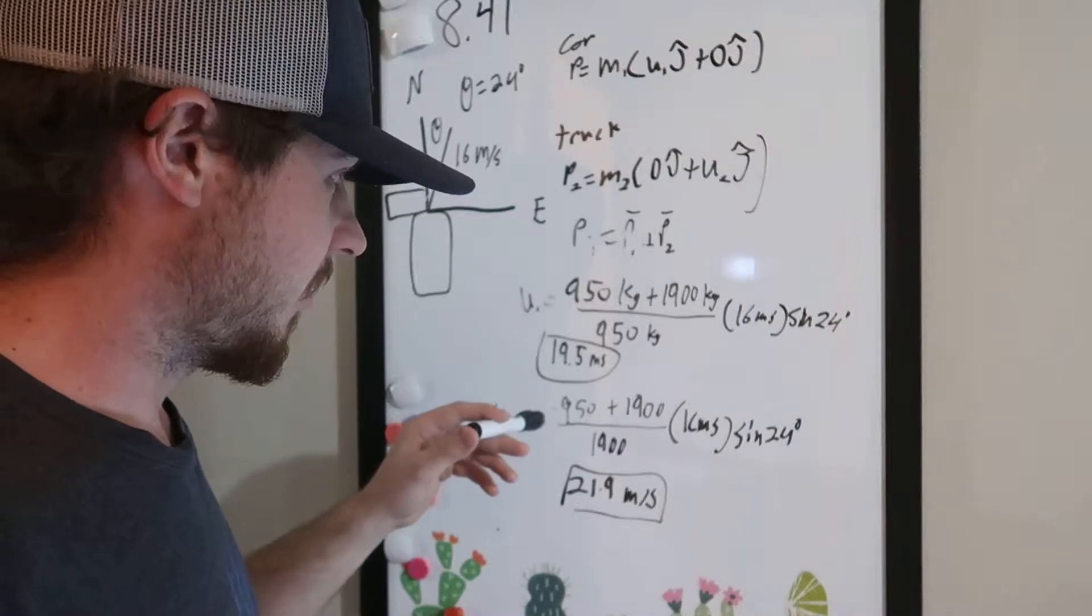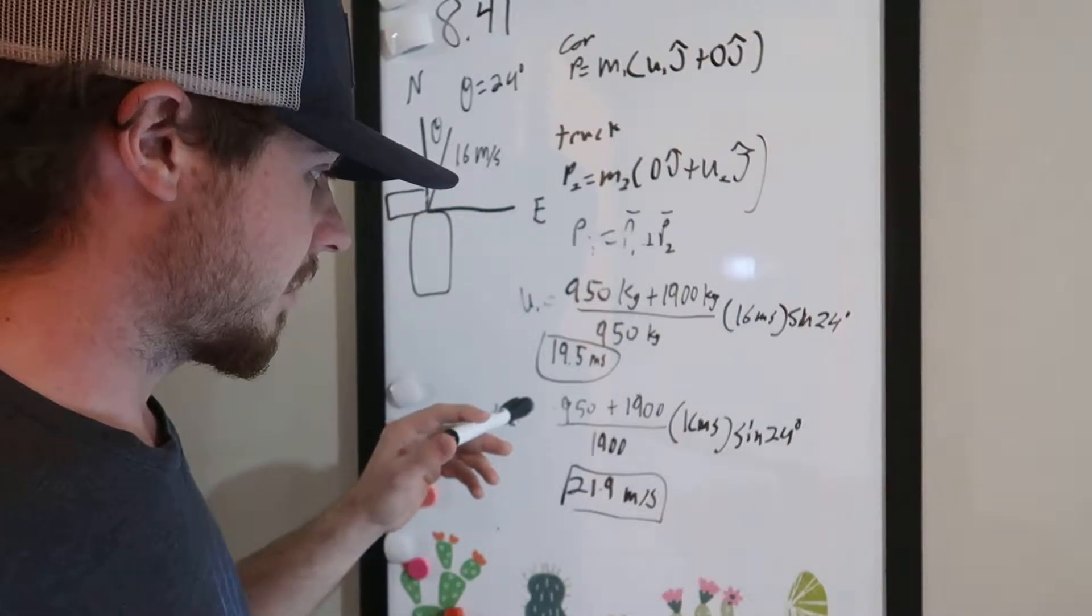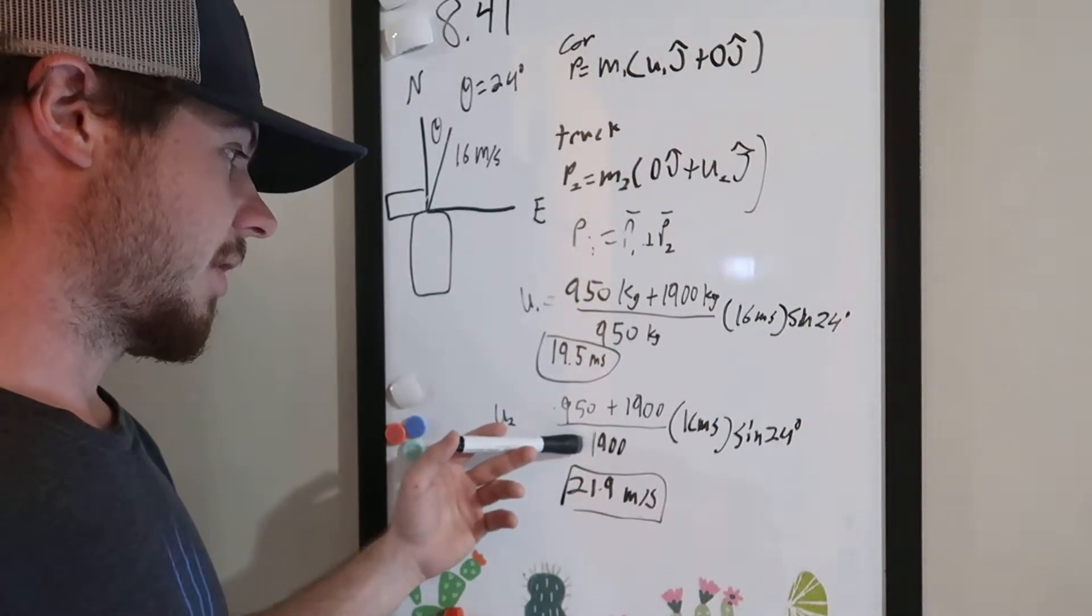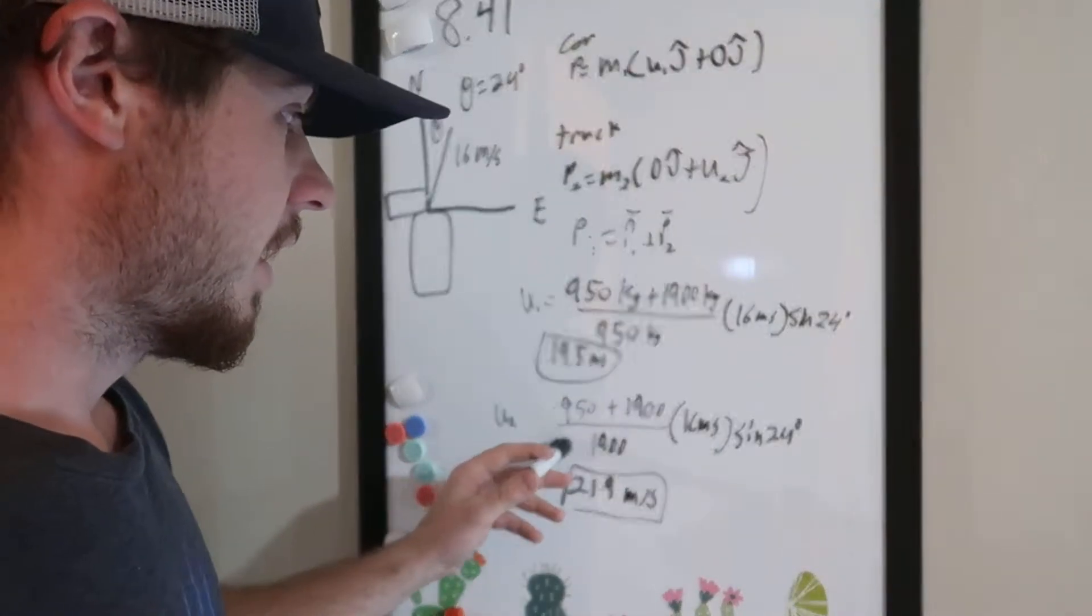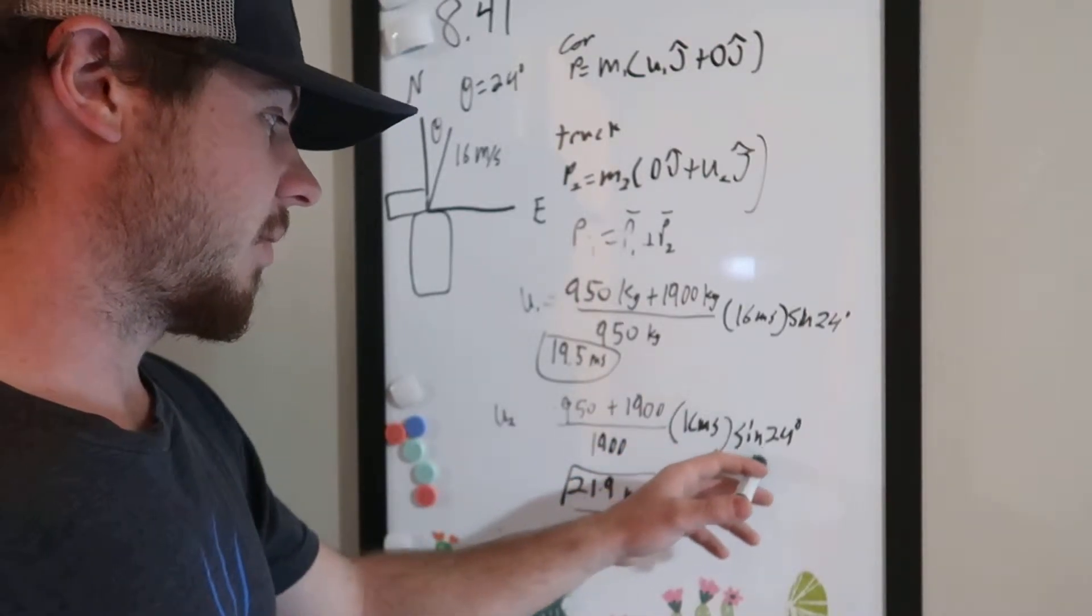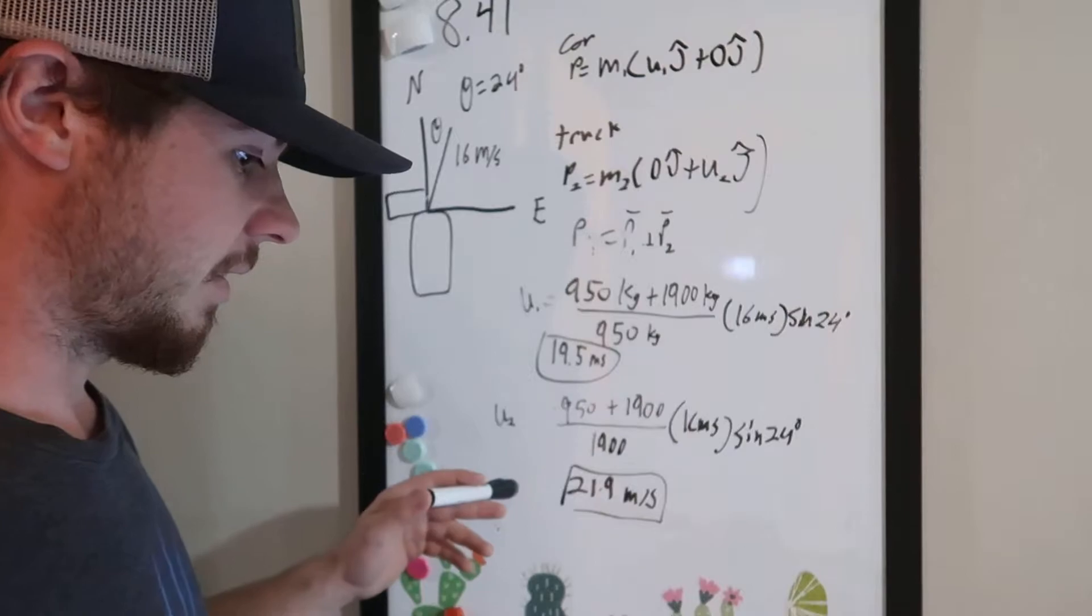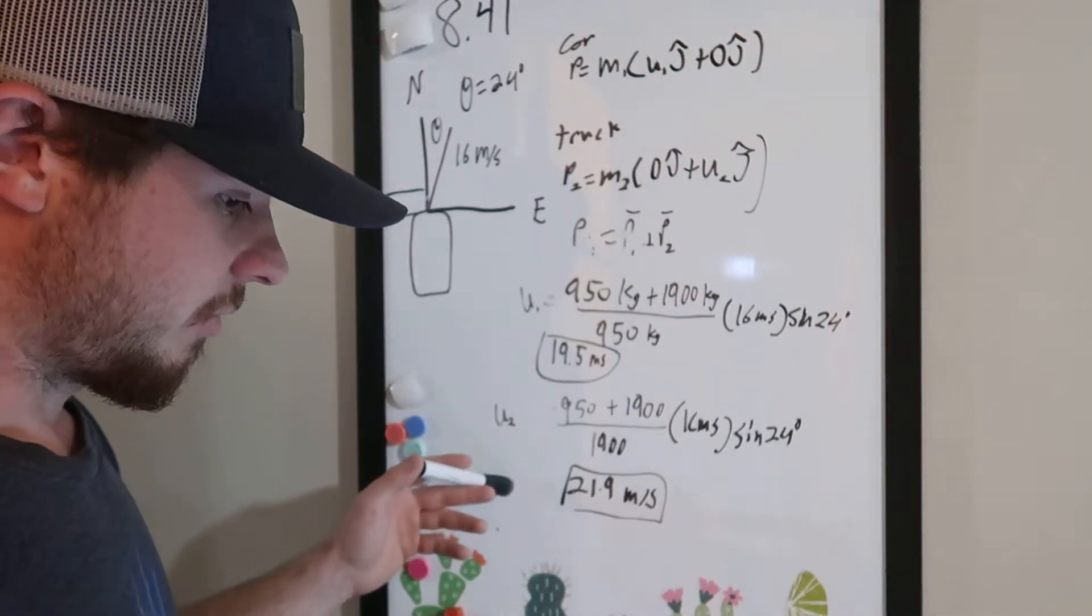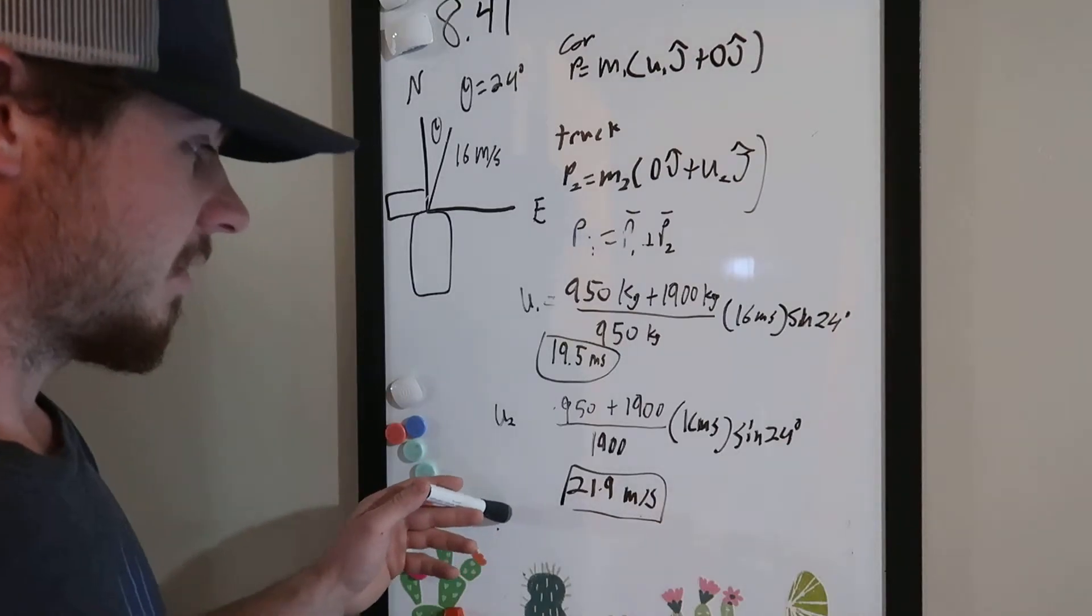And so if we do everything the same for the second equation, except for we substitute the mass of the truck on the bottom of the equation here for 1,900, and then multiply it, same thing, 16 meters a second multiplied by sine of 24 degrees, we're going to get the velocity of the truck before the collision to be 21.9 meters a second.